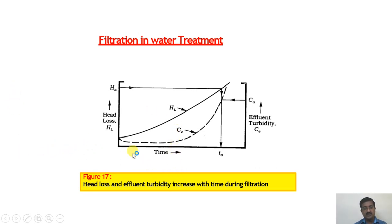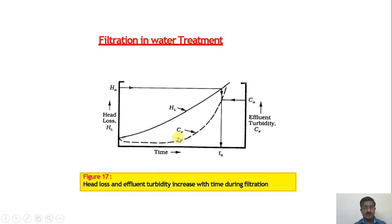A graph of time versus head loss in the filter shows how effluent turbidity also increases with time during filtration. As time passes, turbidity goes on increasing and head loss also goes on increasing. It is necessary to keep close watch on this trend to determine when to carry out backwashing. Different scientists have given formulations to calculate this head loss, which will be covered in subsequent lectures.